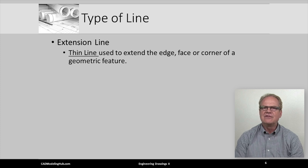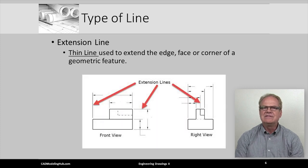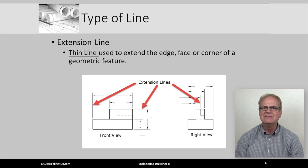Extension lines are thin, solid lines used to extend the edges, faces, and corners of a geometric feature. These lines are used to indicate the starting and end point of a given dimension. Since dimensioning to a hidden line is considered bad practice, rarely will you see or create an extension line that extends from the end of a dashed line. Also, in the ASME standard, a small gap is required between the object line and the corresponding extension line as illustrated in this figure.